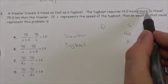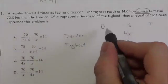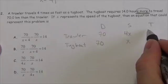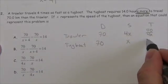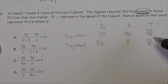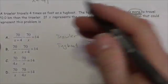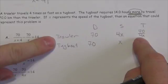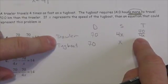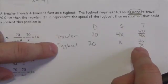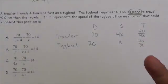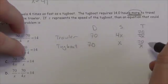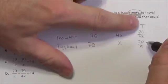The tugboat requires 14 hours more — that's a comparison between the two times, not a value to put in the chart. Both vessels travel 70 kilometers, so time equals distance over speed: trawler's time is 70 over 4x, tugboat's time is 70 over x. The 14 hours is the difference between the two times; once x is known, exact times can be calculated.